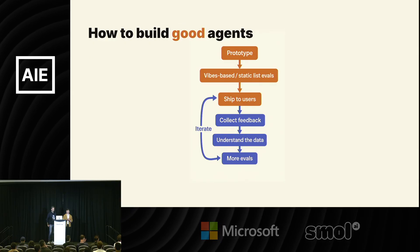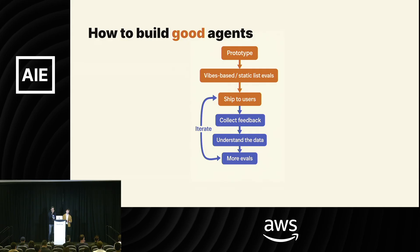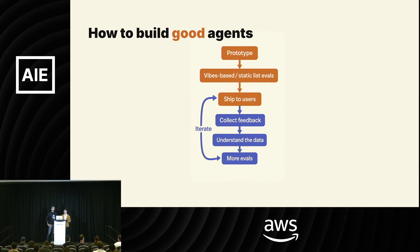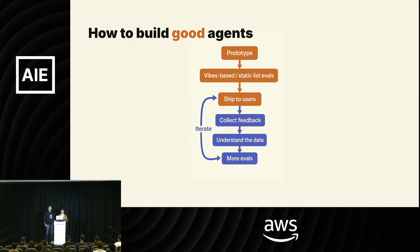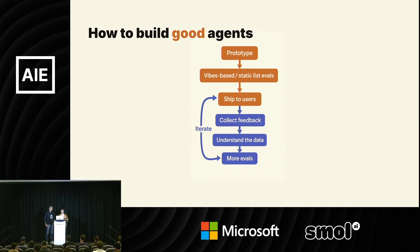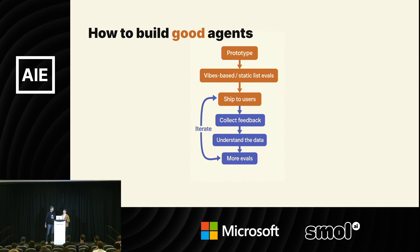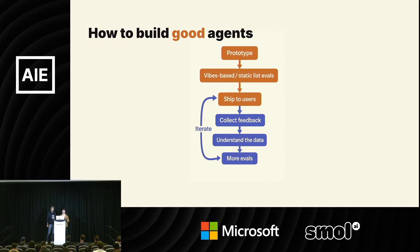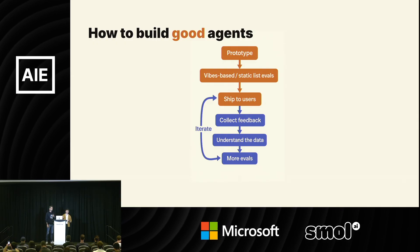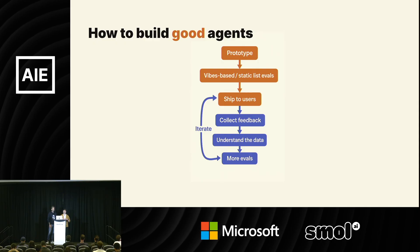It turns out reality has a surprising amount of detail, and we believe that building probabilistic software is a little bit different than building traditional software. The initial prototype is only a start, and after you ship something to your users, your responsibility switches to building the data flywheel. Once your users start using your product, you need to collect feedback.